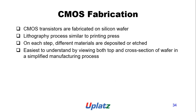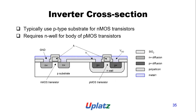CMOS fabrication: CMOS chips are fabricated on silicon wafers using a lithography process similar to a printing press, where at each step materials are deposited or etched. This is easiest to understand by viewing both top and cross-section views in a simplified manufacturing process. The various areas are shown in the figure.